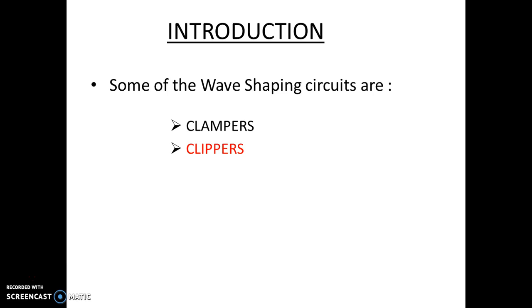Wave shaping circuits are circuits which are used to create or modify time-varying signals such as voltage or current with the help of electronic circuits or electronic devices. These devices can be active devices and/or passive devices. Some of the wave shaping circuits are clampers, clippers, etc., and here we are going to discuss about clippers.